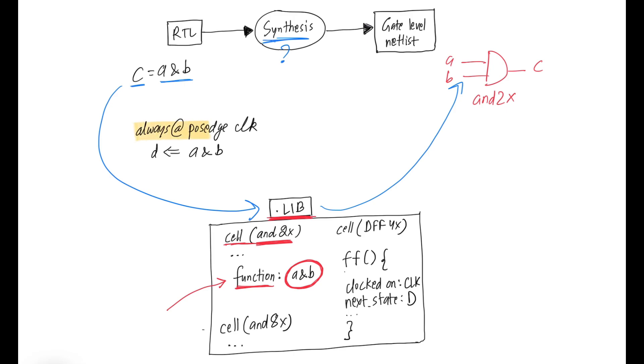Let's take another example where we have a statement like this, where at every positive edge of the clock, A and B goes to D. So by reading this statement, the synthesis tool knows that it needs to insert an AND gate as well as a flip-flop.